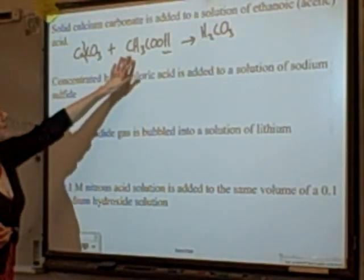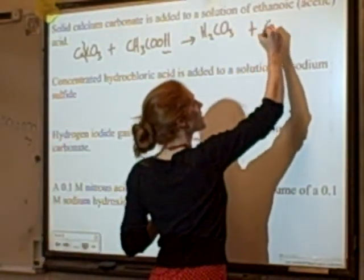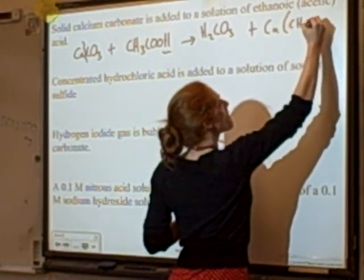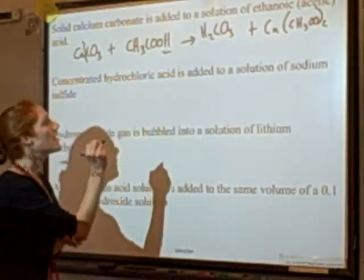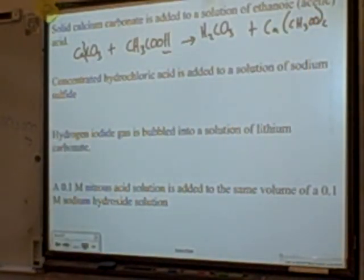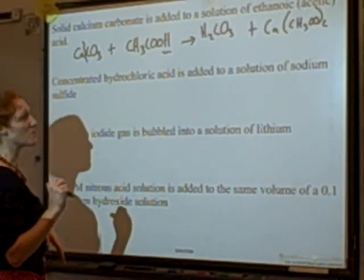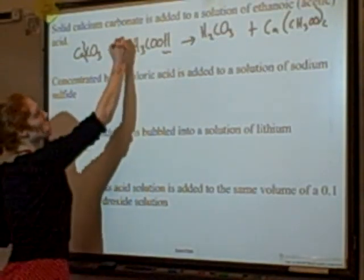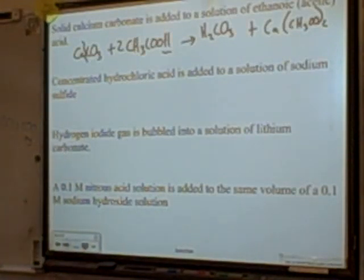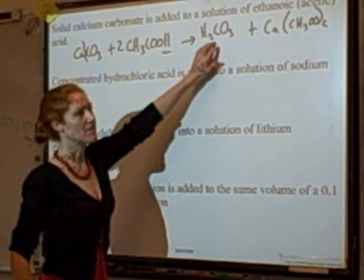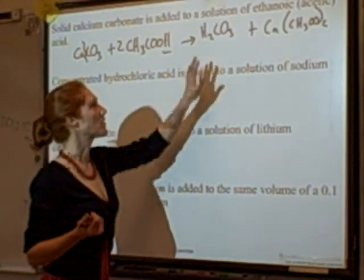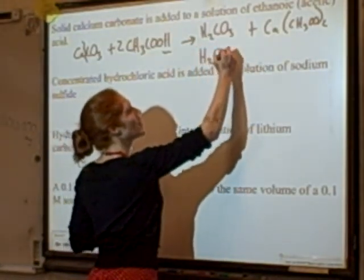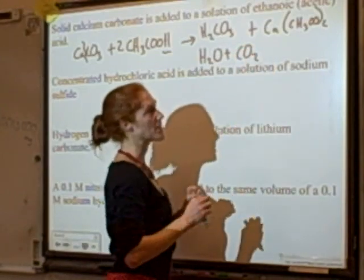That leaves calcium to go with the acetate: Ca2+ and two CH3COO- ions. Carbonic acid is something we need to learn — it decomposes into carbon dioxide and water. So whenever you see carbonic acid, you can write H2O plus CO2 because it decomposes.